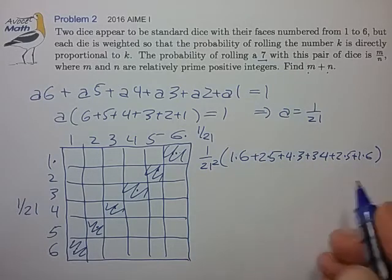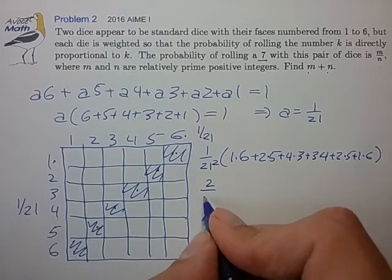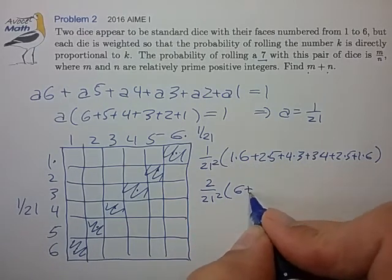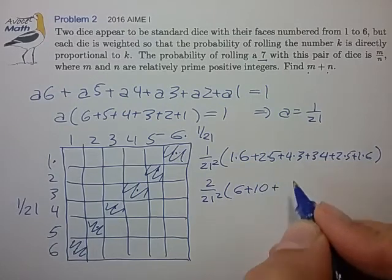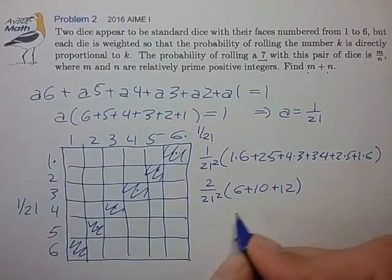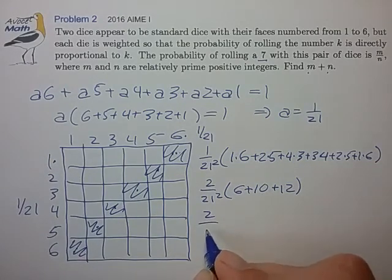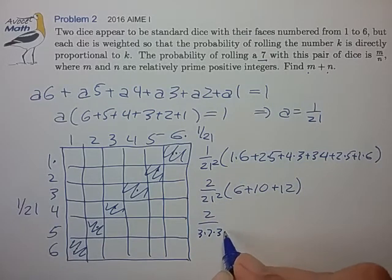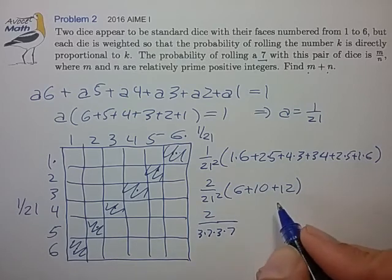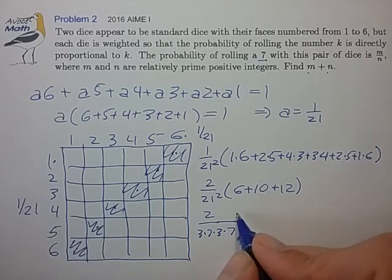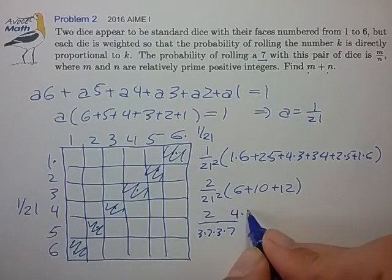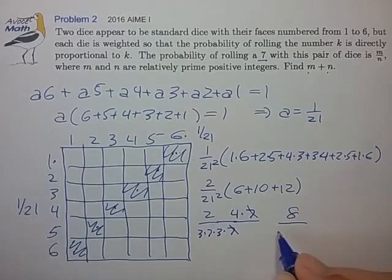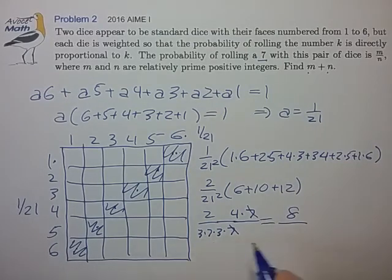it looks like we have a few repeats here. So we can pull out a factor of 2. And 1 times 6 is 6. 2 times 5 is 10. 12. So this is 2. 21 squared is 3 times 7 times 7. Cancel out the 7s. We have an 8. 3, 3, 63.